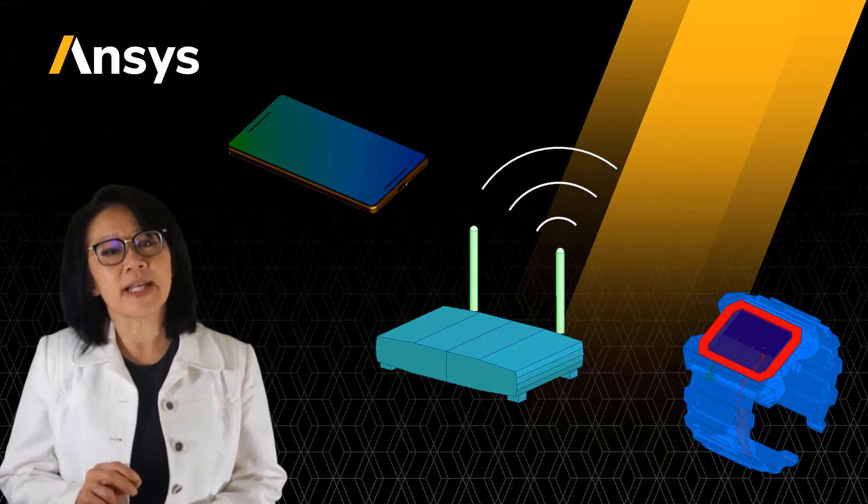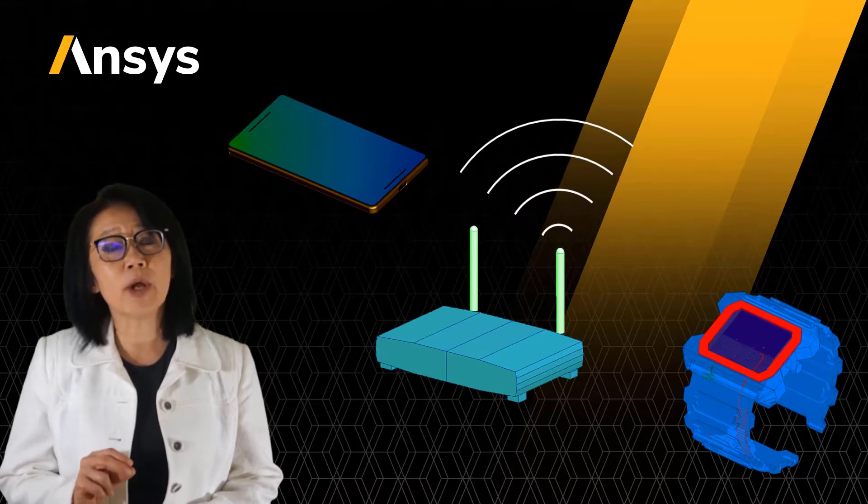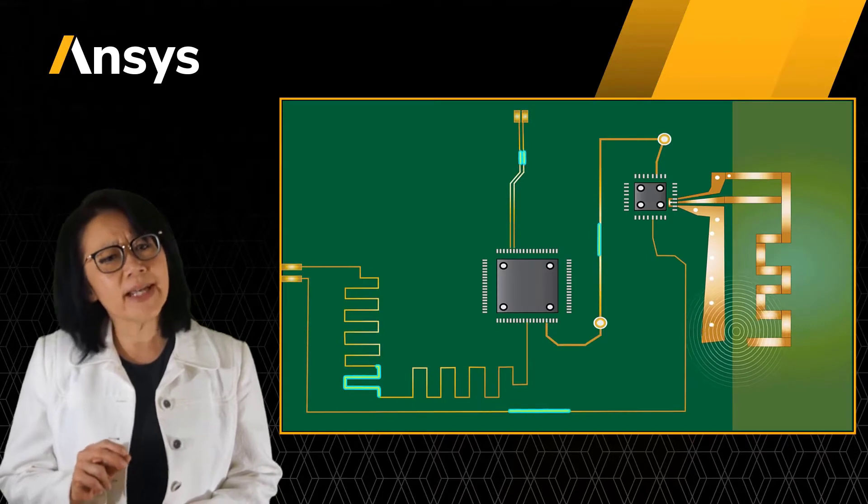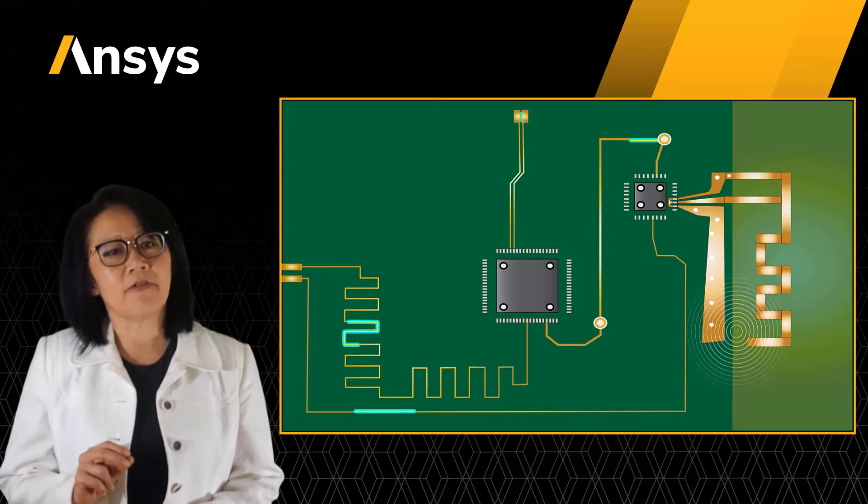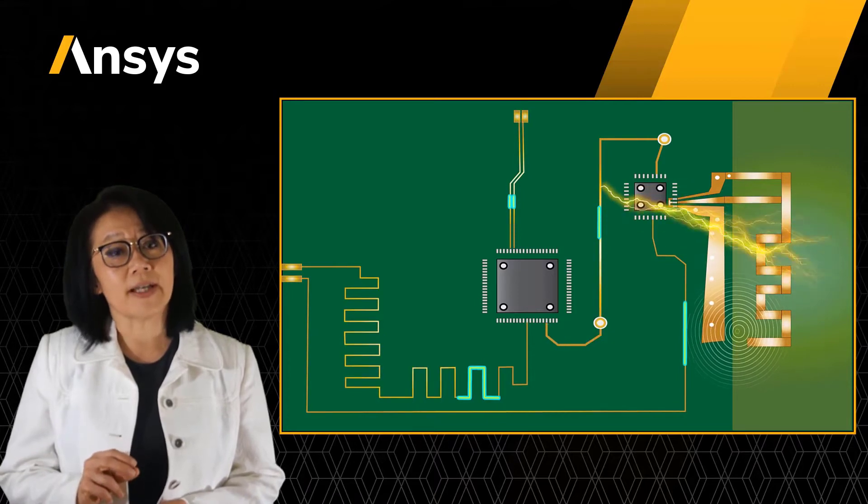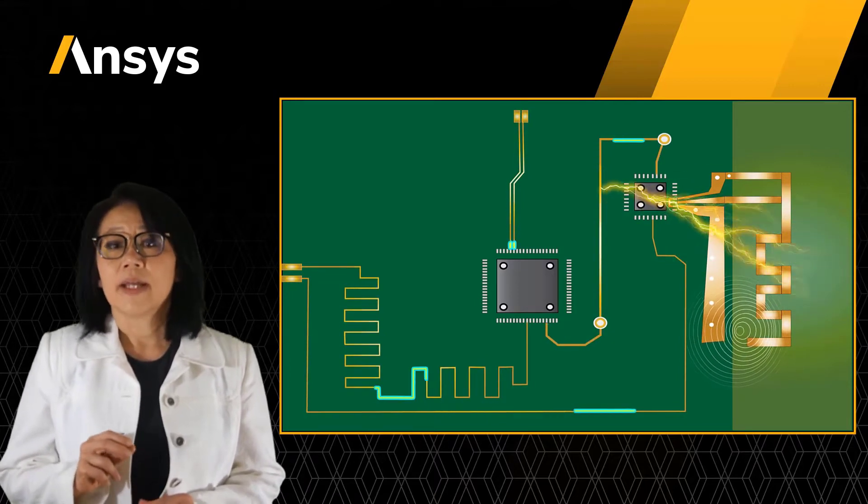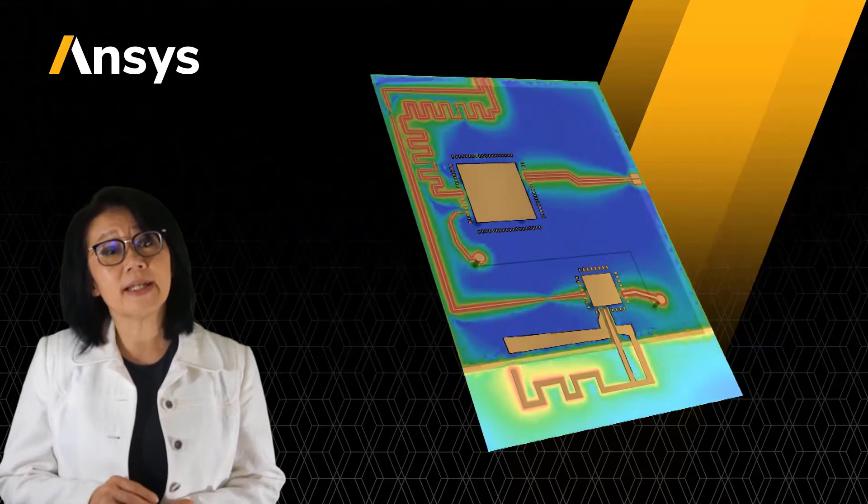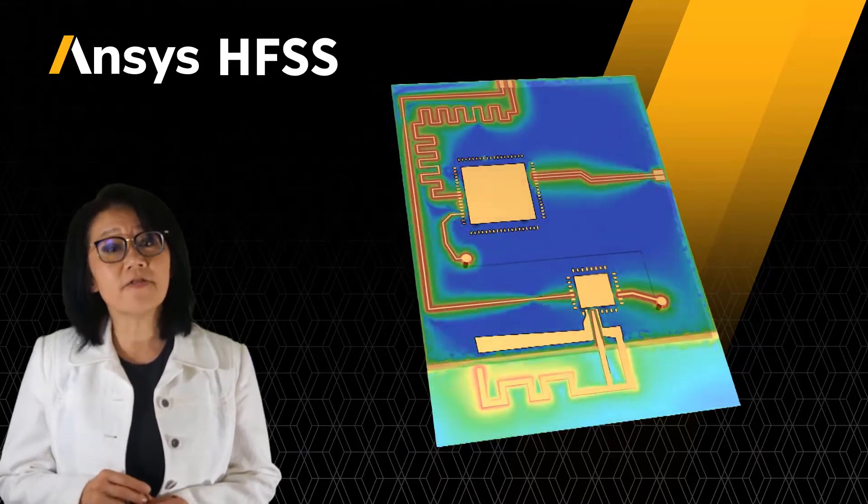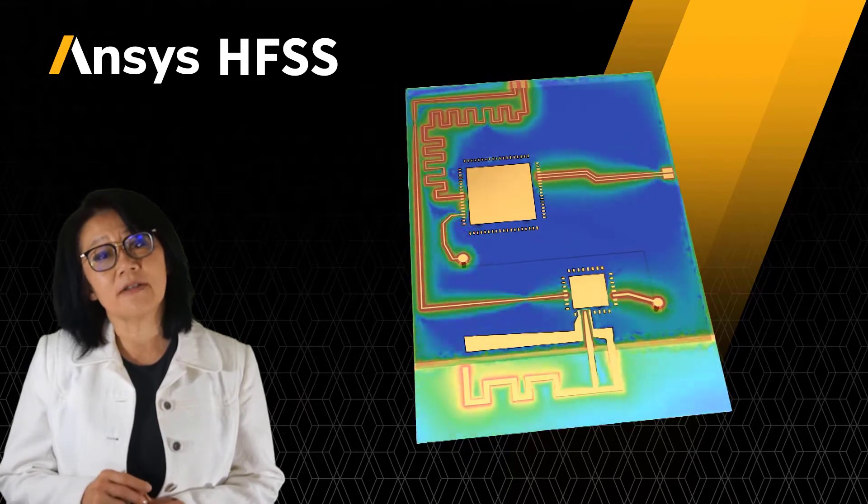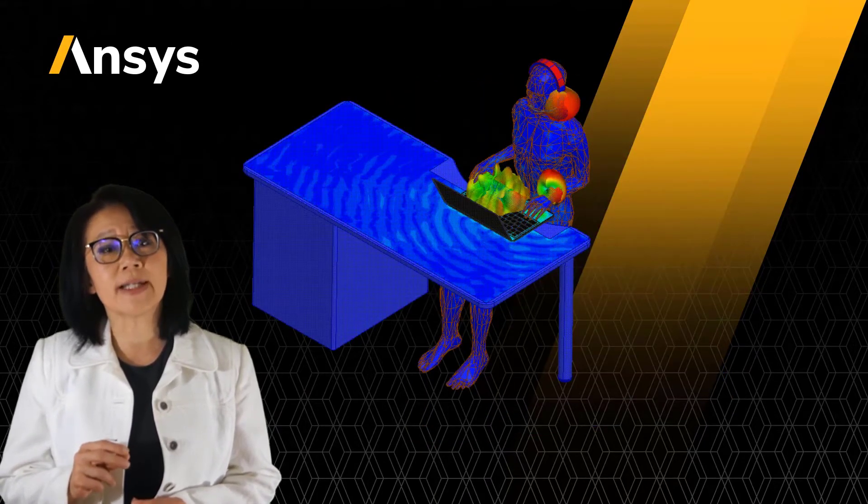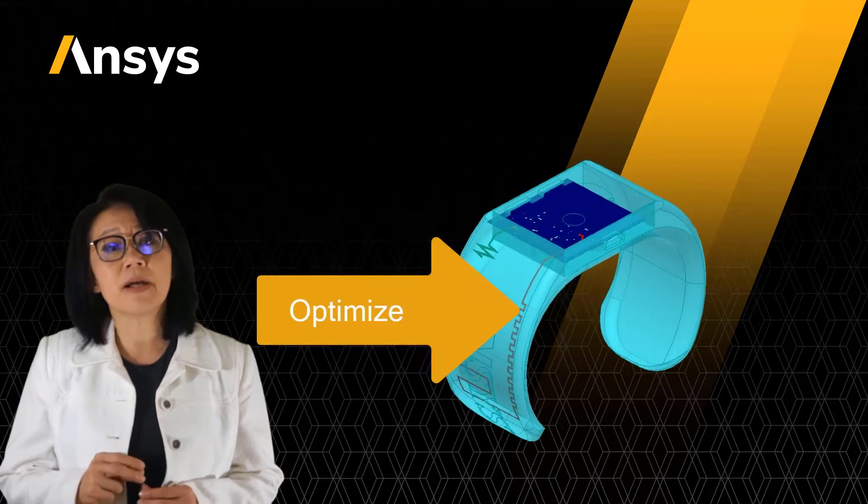Electromagnetic fields dictate the behavior and performance of these products. But we can't easily observe electromagnetic fields or currents flowing on an electronic device. However, using an electromagnetic simulator such as ANSYS HFSS, we can visualize the fields within and outside the device. This helps us understand how a device operates and enables us to optimize its performance.